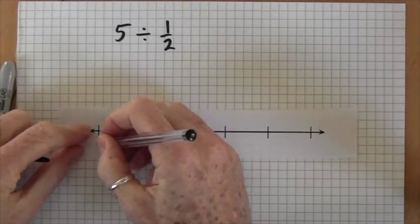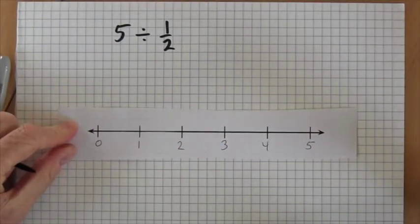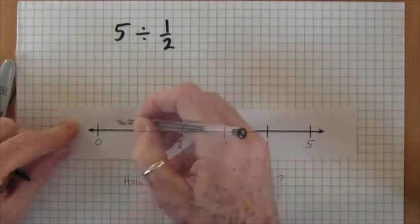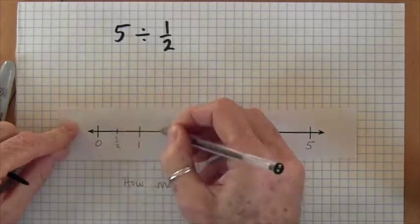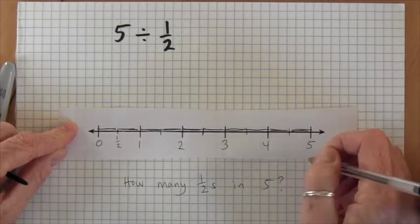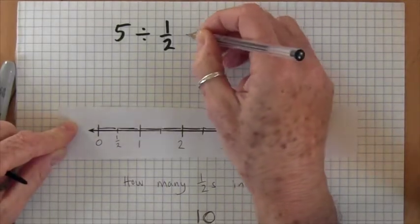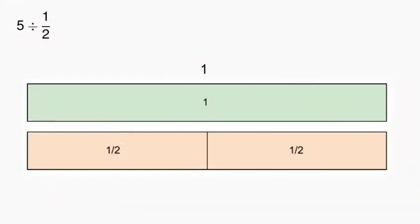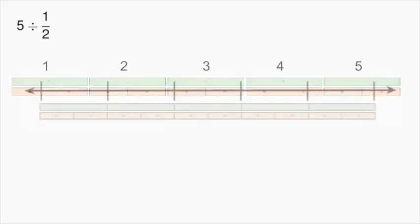This problem could also be solved using a fraction kit or fraction bars, counting the number of halves in one, two, three, four, and then five — and that result can be related back to the number line.